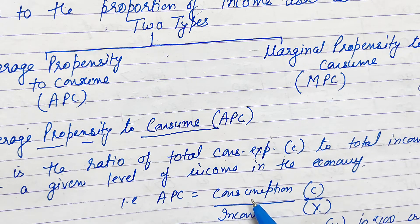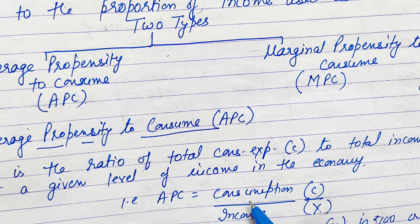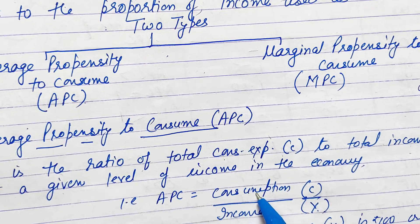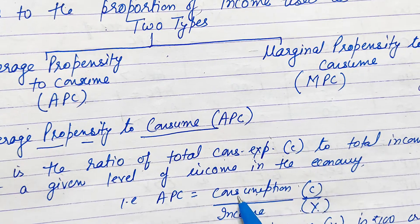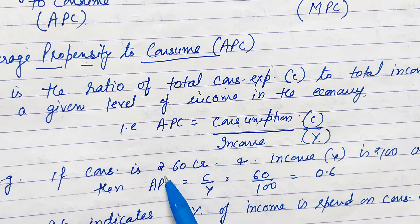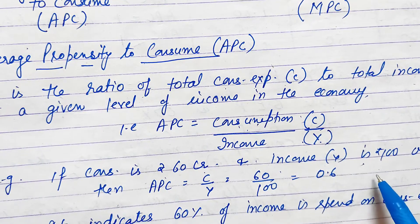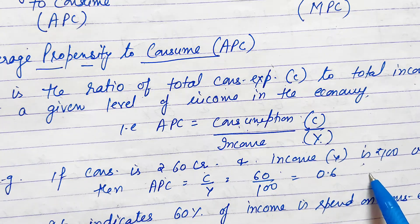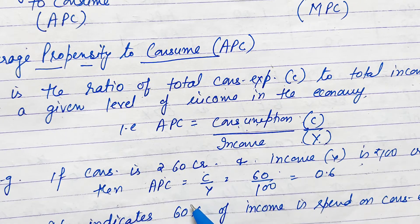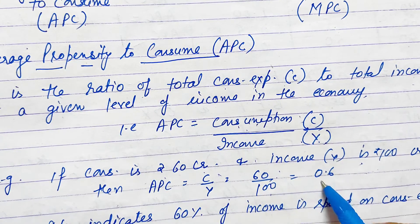Suppose income is 200 and the consumption expenditure at that level of income is 100. So how do you calculate average propensity to consume? It is calculated as the ratio C upon Y, where C stands for consumption and Y stands for income. For example, if consumption expenditure is 60 crore and the level of income is 100 crore, then APC = 60 upon 100, that is 0.6.